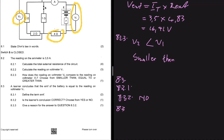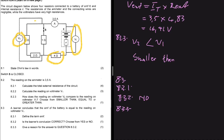EMF is the reading on a voltmeter across the terminals of the battery when there is no current flowing to the external circuit. If there were no current flowing to the external resistors, then V1 would be reading EMF. But in this case, current is flowing to those resistors, so V1 is reading V_external, not EMF. That's why 8.3.1 asks you to define EMF — if you know the definition, you can answer 8.3.2 and 8.3.3.